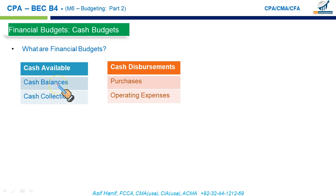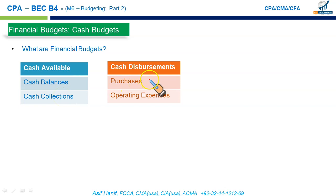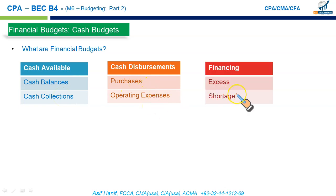There will be an opening balance at the start of the period — the quarter, the month, or week. Disbursements primarily involve purchases, payments to suppliers, and other operating expenses such as rent, electricity, repair, and maintenance. Once we have the projected cash inflow and projected cash disbursement, we can establish whether we are facing a cash shortage — for which we need to make arrangements — or whether we expect excess cash which we could invest in marketable securities.